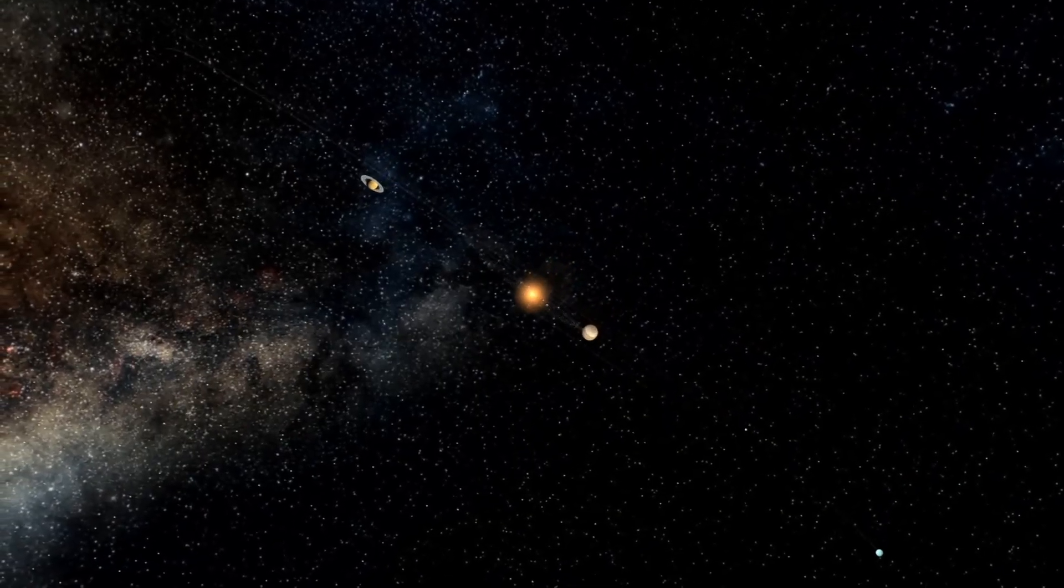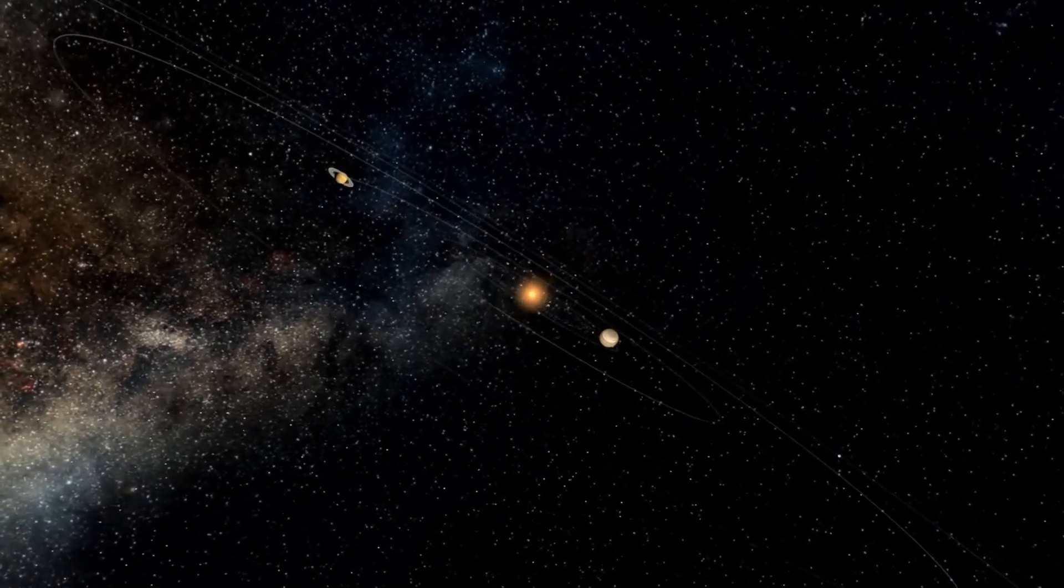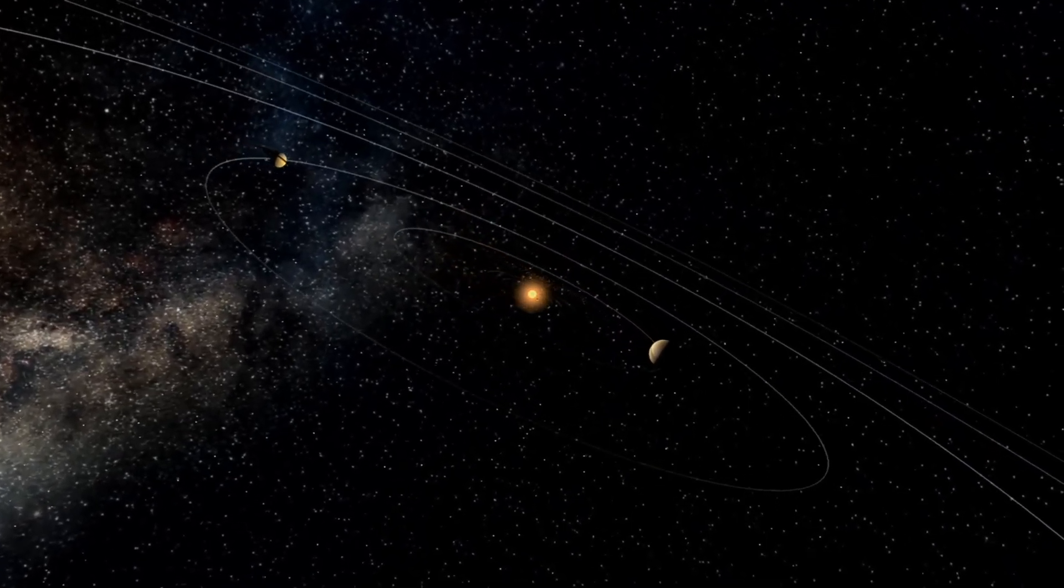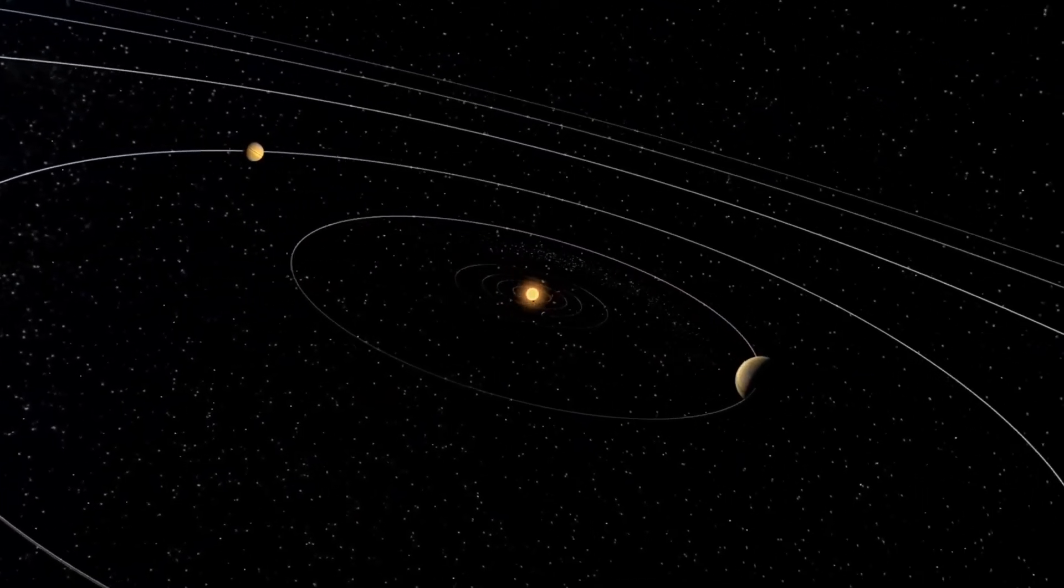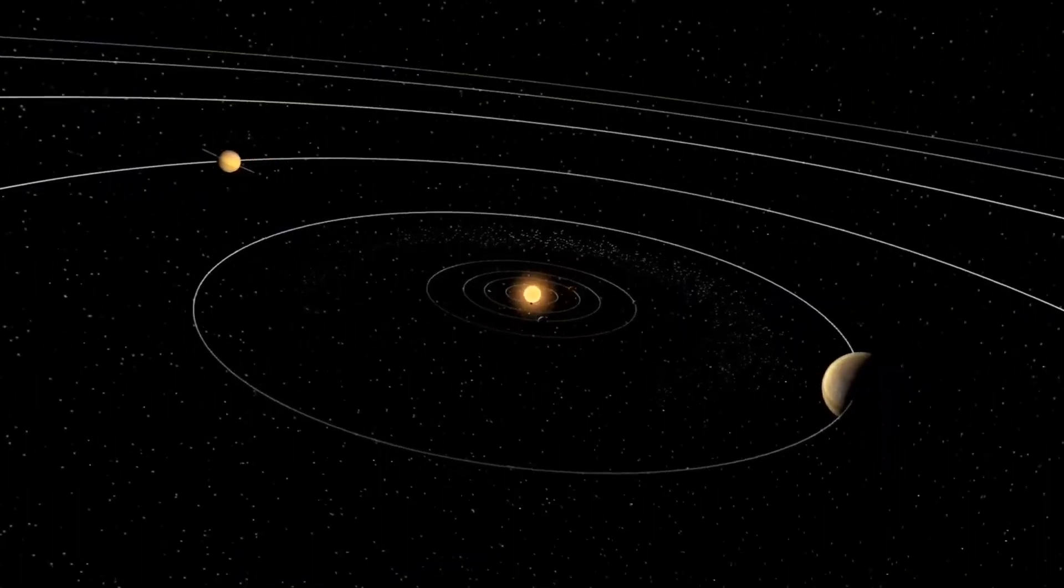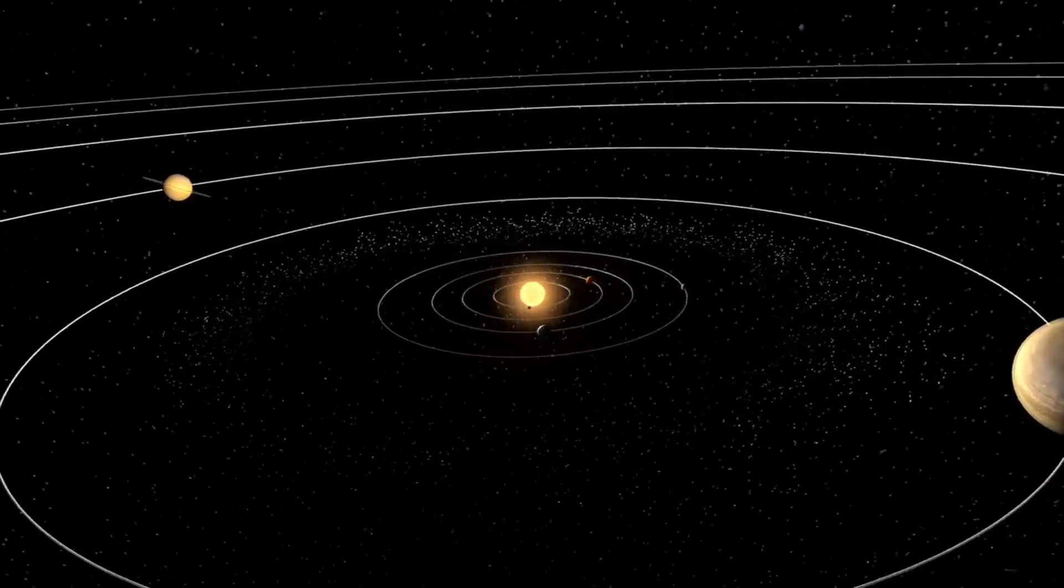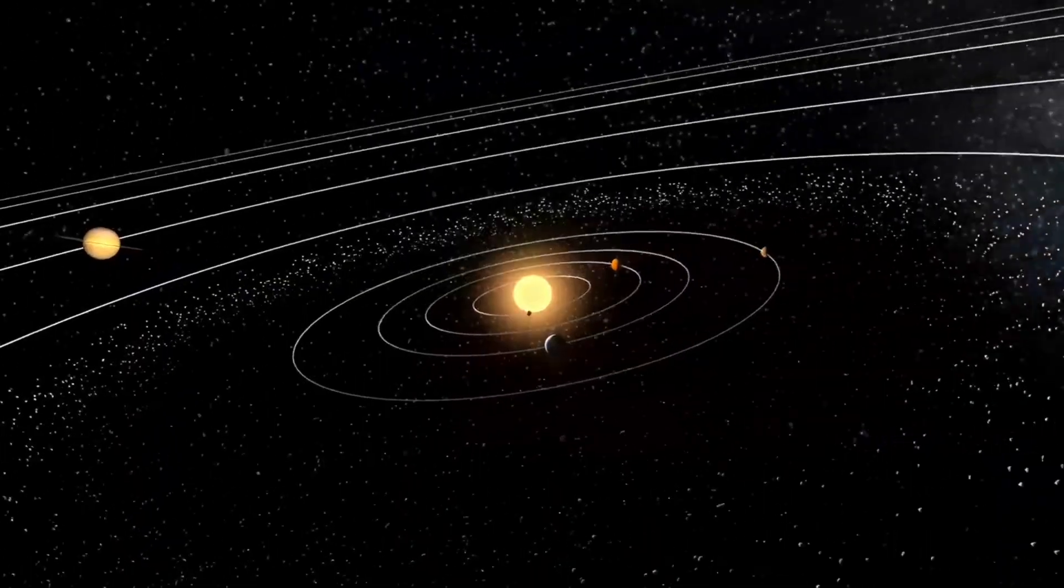VY Canis Majoris, another contender, extends perhaps 1,500 solar radii. But Stevenson 2-18 surpasses them all, not by a small margin, but by a cosmic gulf. If Betelgeuse were a city, Stevenson 2-18 would be a continent.